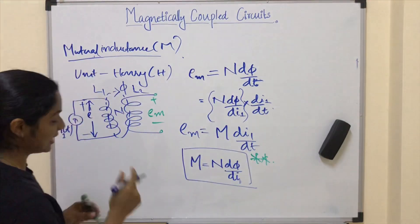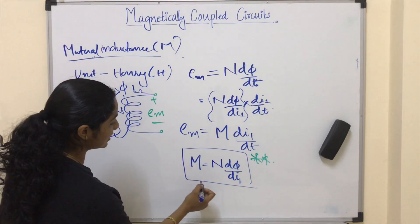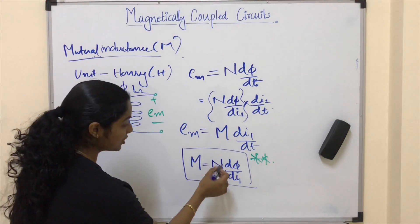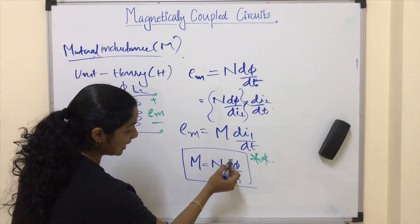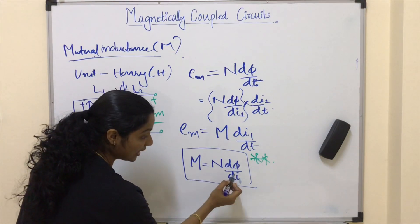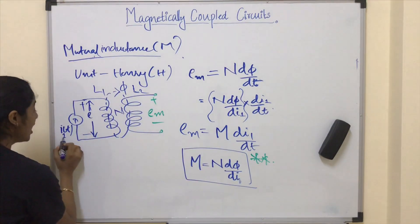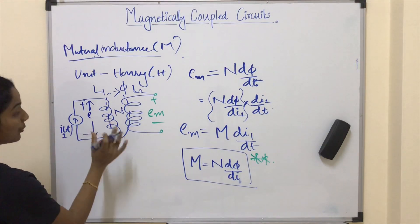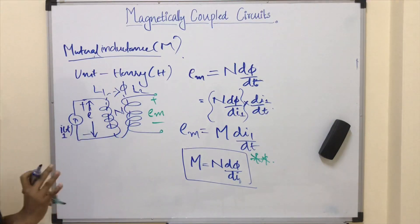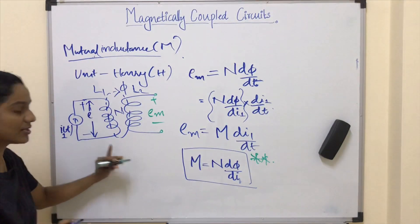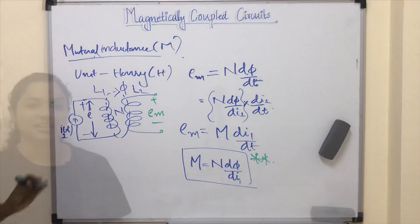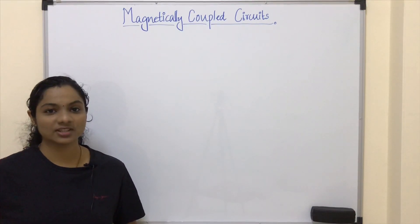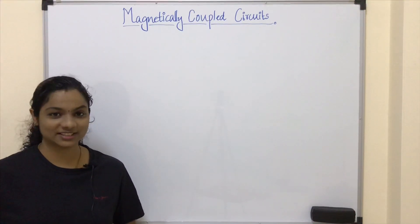Mutual inductance is the rate of change of flux linkage in a coil due to the time varying nature of current passing through the other coil, where both coils are mutually coupled to each other. I hope this part is clear. Let's conclude this section today; we will resume with dot convention in the next lecture. Thank you.